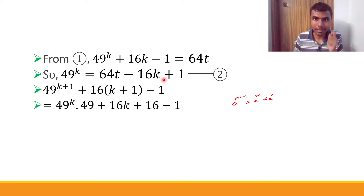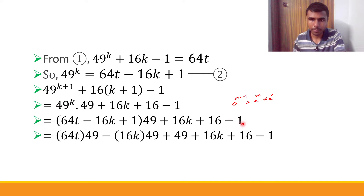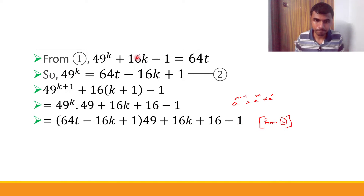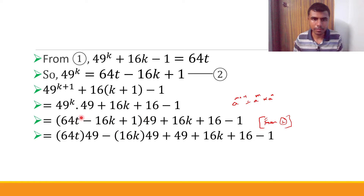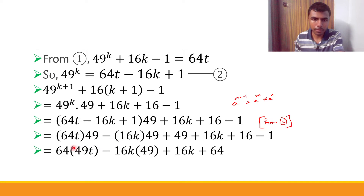In place of 49^k, I substitute from equation (2): (64t - 16k + 1) × 49. After basic multiplication, I get 64t×49 - 16k×49 + 49. Now, to the full expression 49^(k+1) + 16(k+1) - 1, I add the remaining terms: +16k + 16 - 1. Combining the constants: 49 + 16 - 1 = 64. So I get 64t×49 - 16k×49 + 64.